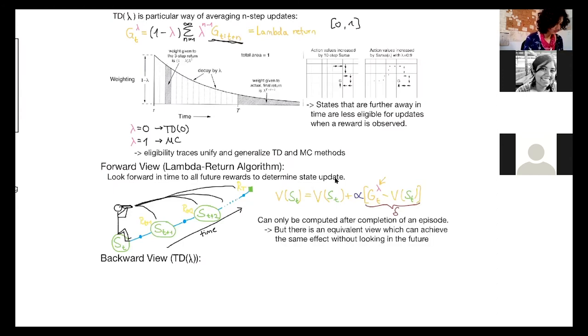And the forward view, this value update can only be computed after the completion of an episode, because we need to know all the future rewards. But there is an equivalent view, which can achieve the same effect without looking into the future. And that's the backward view.